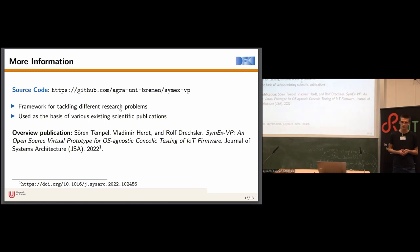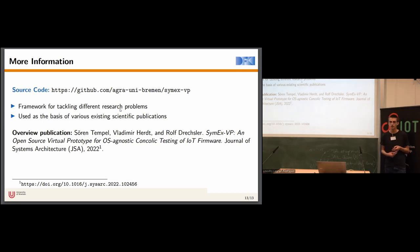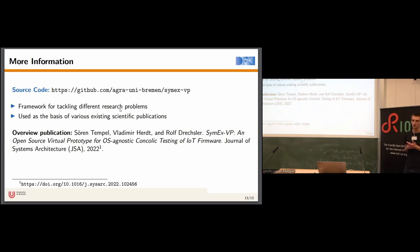The source code for SymEx-VP is entirely open source and available on GitHub. We have used SymEx-VP as a framework for researching different software verification problems in the embedded domain and as the basis for various scientific publications. The SymEx-VP framework and the publications based on it are presented in an overview publication called 'SymEx-VP: An Open Source Virtual Prototype for Architecture-Agnostic and Concolic Testing of IoT Firmware,' published this year in the Journal of Systems Architecture and available as open access.